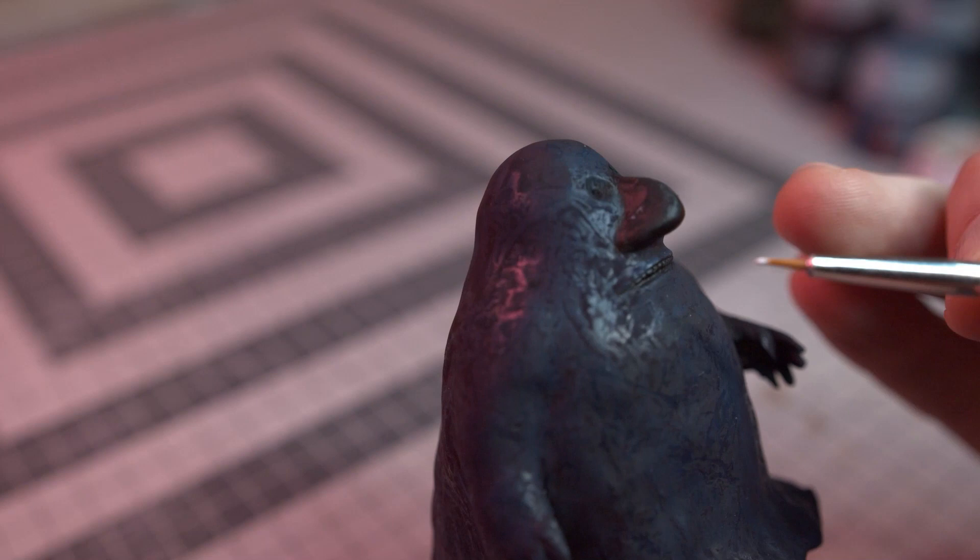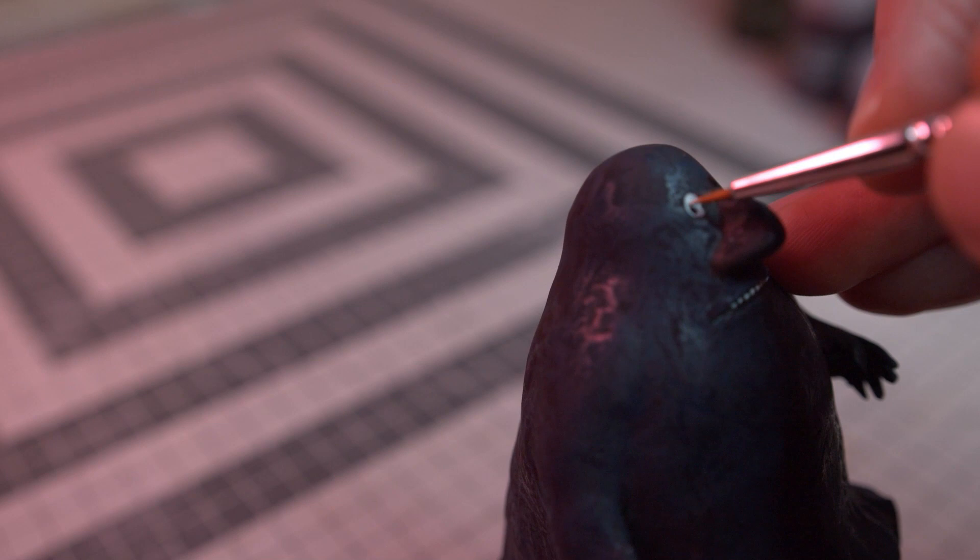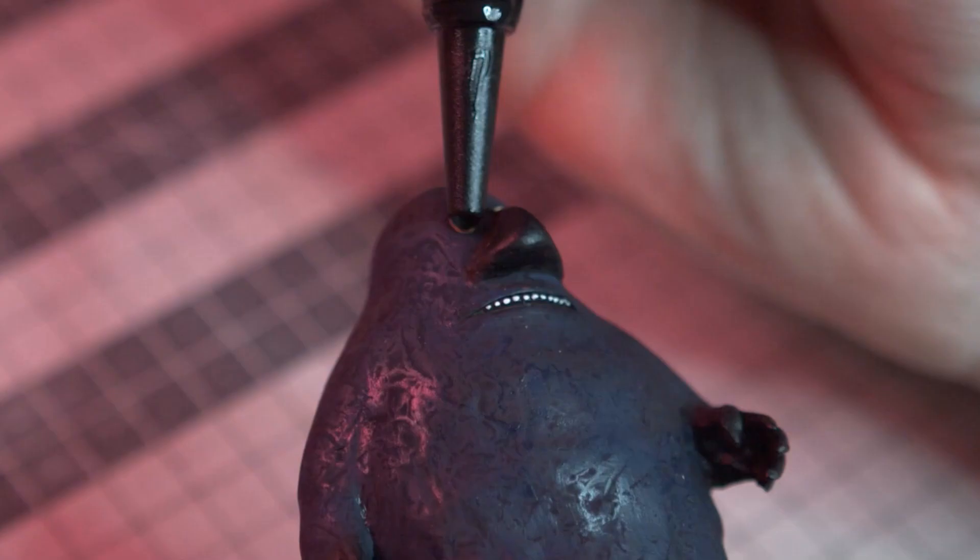The teeth and eye sockets are painted white, then an orange wash to the eyes. A tiny drop of UV resin to each eye socket really makes the model look more alive.